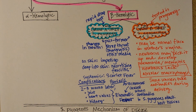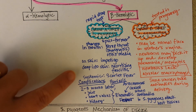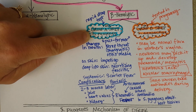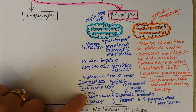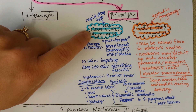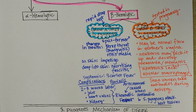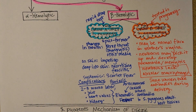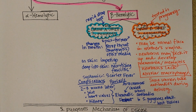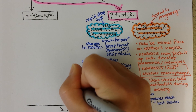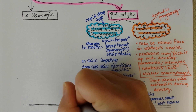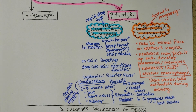One more thing: certain strains of Streptococcus pyogenes are more likely to cause the complication of rheumatic fever, and a certain strain of Streptococcus pyogenes is more likely to cause psoriasis. If you have room on your notes, certain strains of Streptococcus pyogenes are notable for these complications.